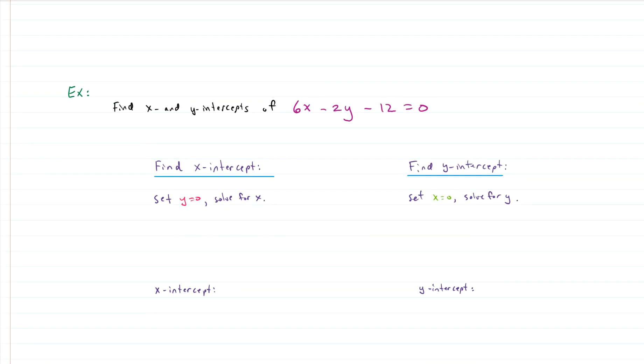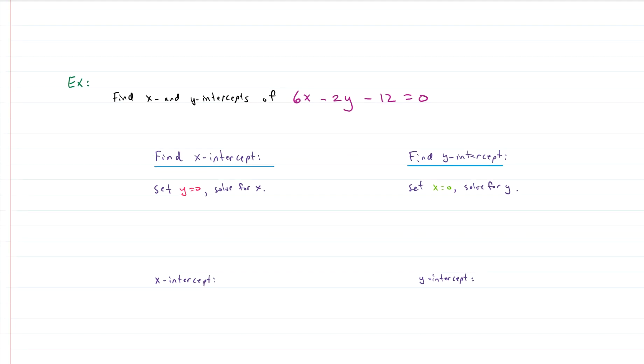If we want to find the x and y-intercepts for 6x minus 2y minus 12 equals zero, this is an equation of a line and we want to find the x and y-intercepts. Maybe we want to graph it, maybe we were just looking for x and y-intercepts. We can totally do it.